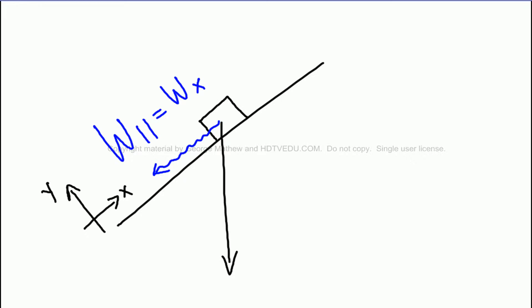And then we have a perpendicular component of the gravitational force. So here is W, and this is W perpendicular. And this is Wx. Whenever we are given the horizontal and vertical components...